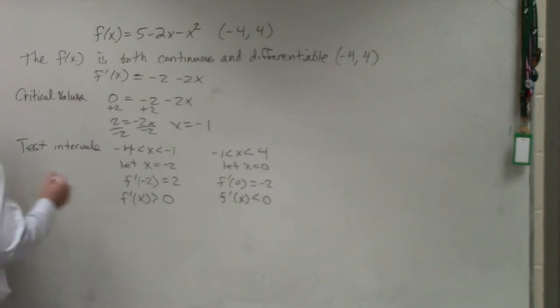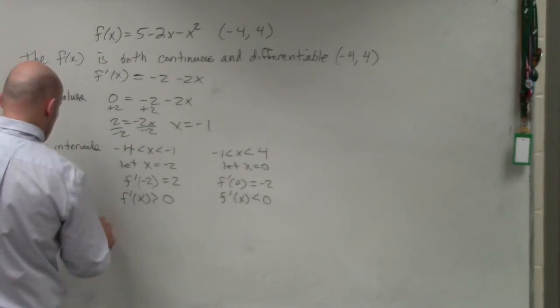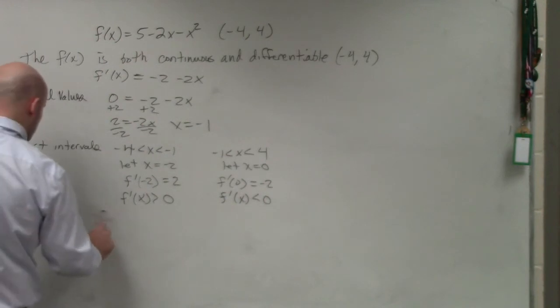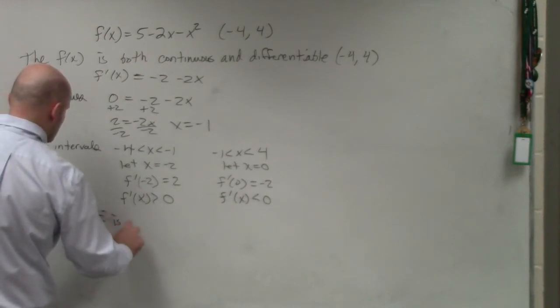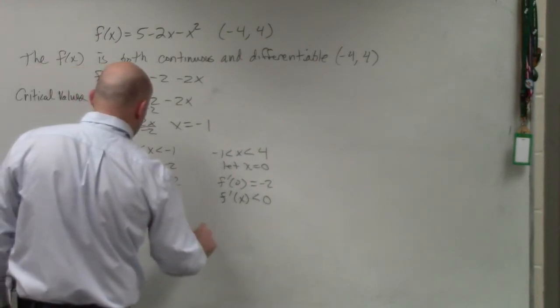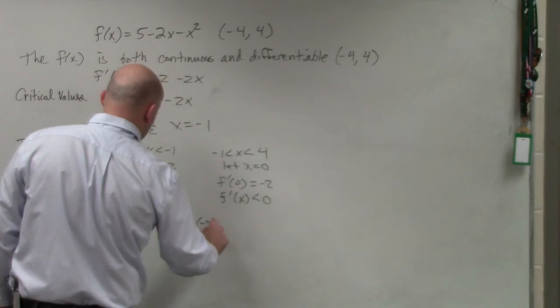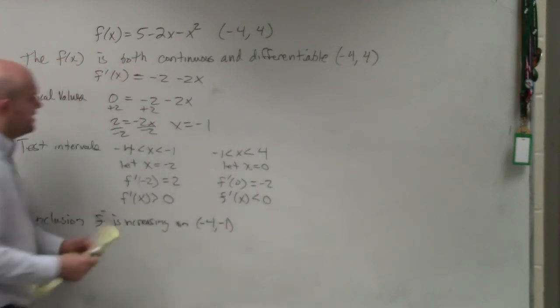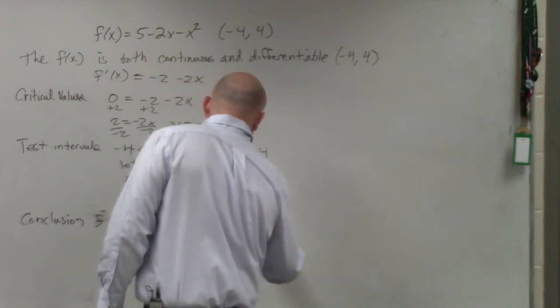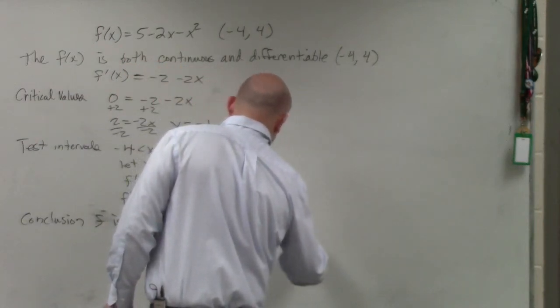So we can say, where are we saying... oh test intervals. And then we can write our conclusion. Conclusion: f is increasing on the interval negative four to negative one. You could write it in inequality notation or go back to open interval. F prime of x is greater than zero.